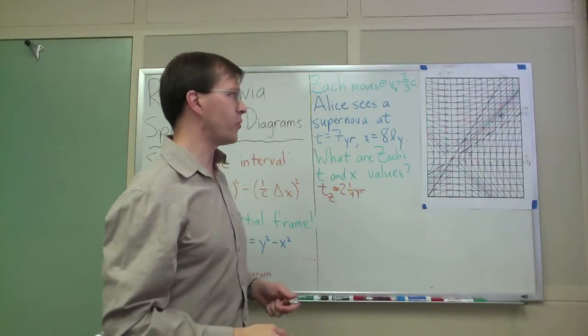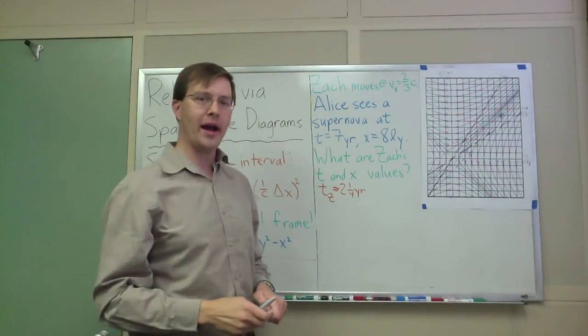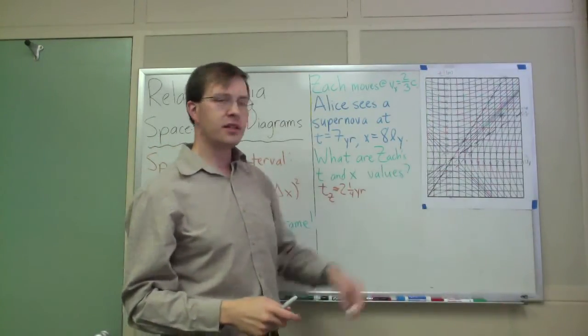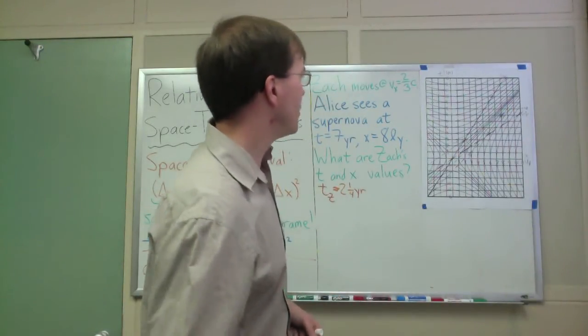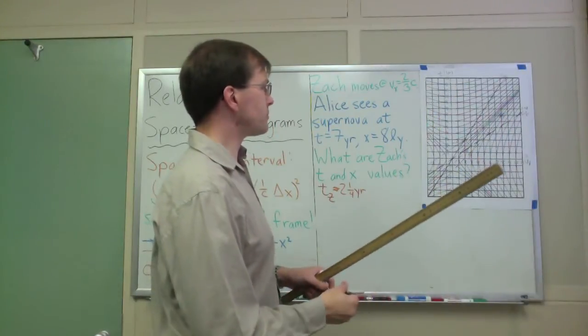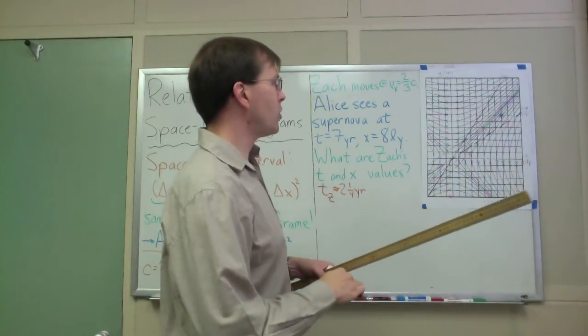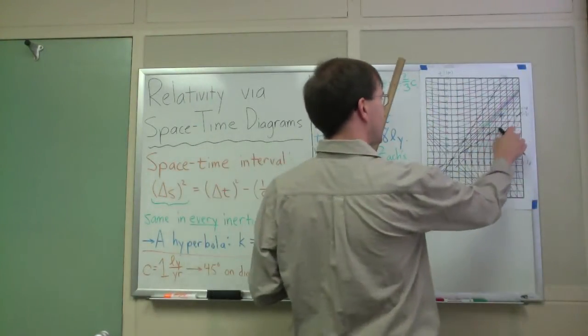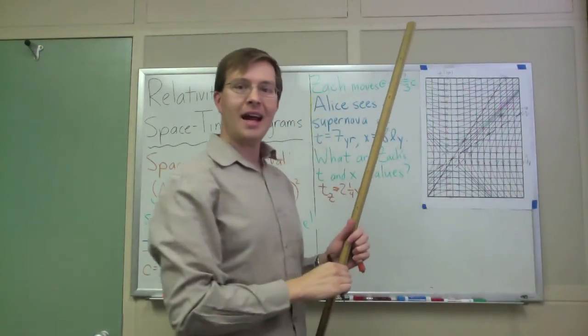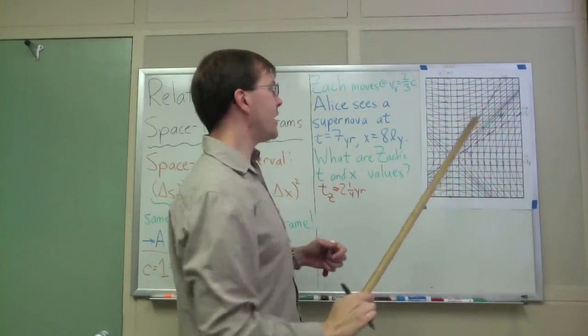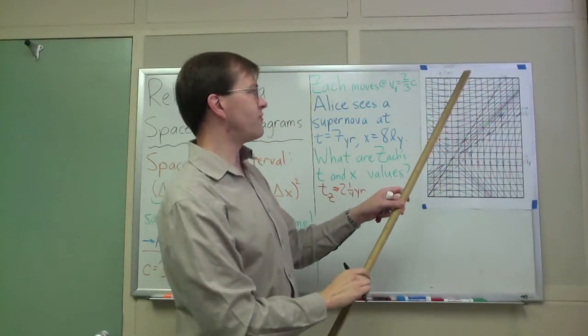The other question, of course, is how far away from the origin does Zach think the supernova took place? And here we do exactly the opposite process. We say, well, we need to figure out what point on Zach's t equals zero line corresponds to the position of that thing, of that supernova. And to do that, I just want to say, well,